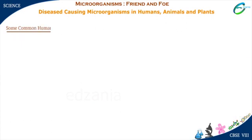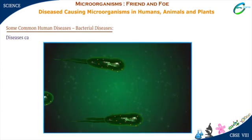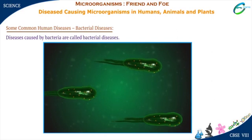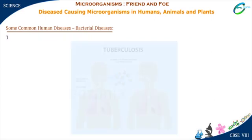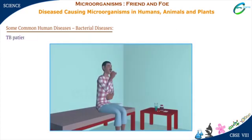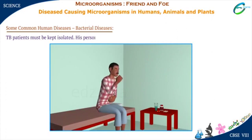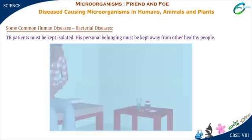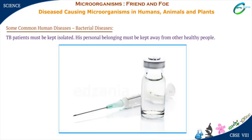Some common human diseases — Bacterial diseases: Diseases caused by bacteria are called bacterial diseases. Tuberculosis spreads through air. TB patients must be kept isolated, and their personal belongings must be kept away from other healthy people. Vaccination at a suitable age may prevent tuberculosis.